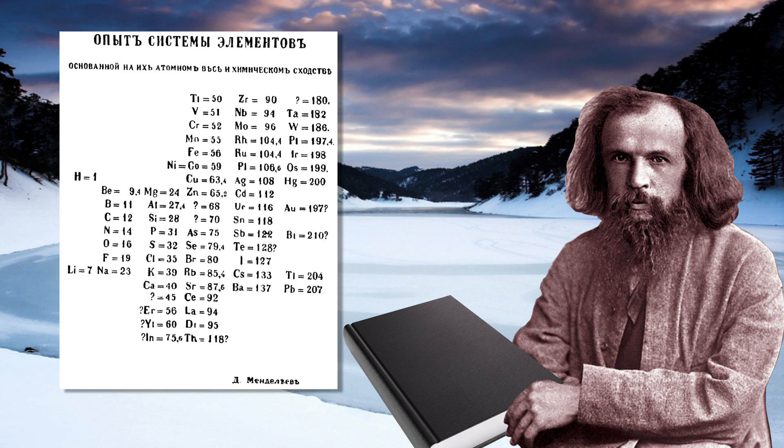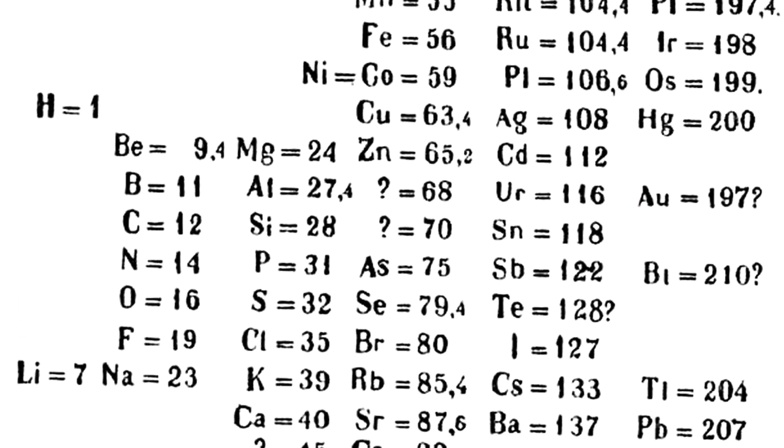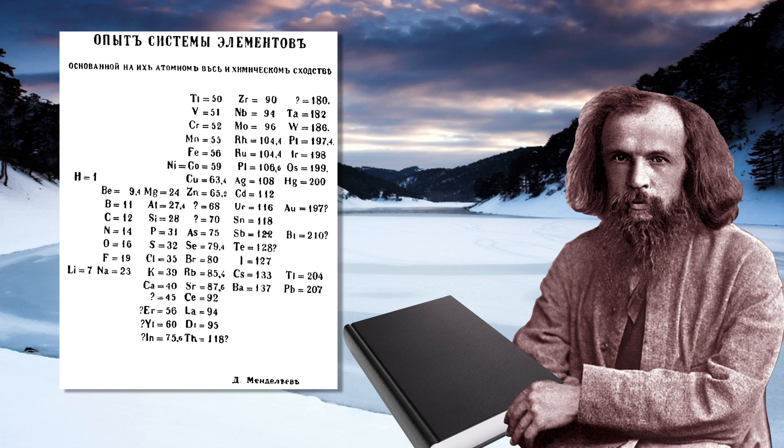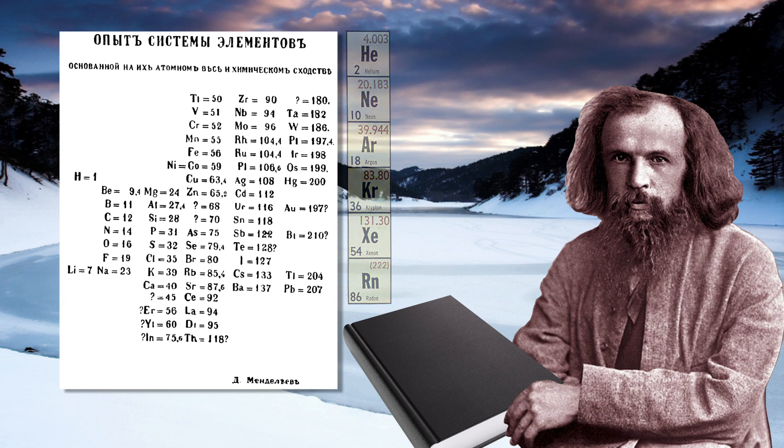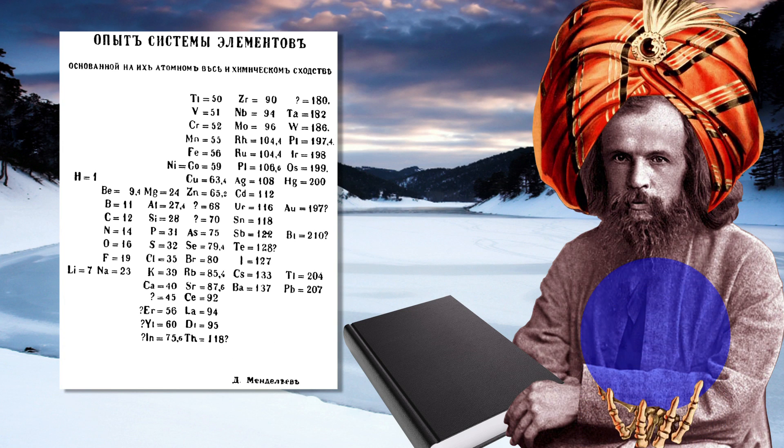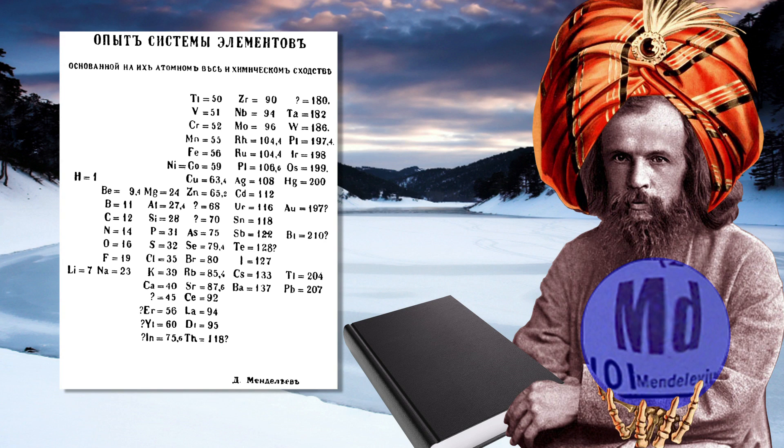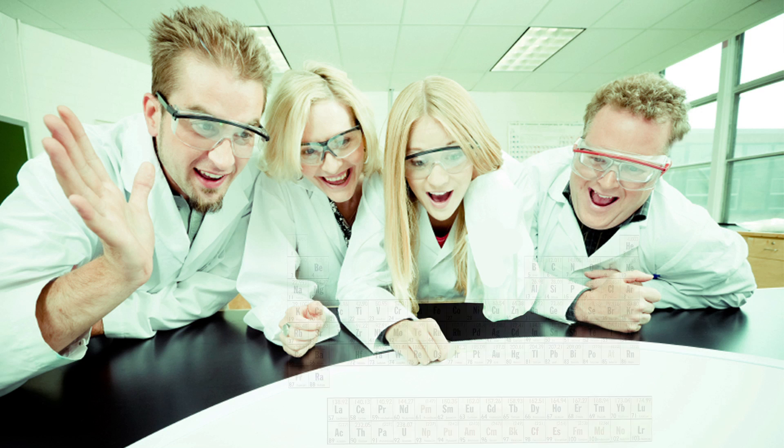He didn't get everything right immediately. First, he was only working with the 63 known elements of his time. Second, his original table didn't include the noble gases. However, he was able to predict additional properties of unknown elements, and his work was taken up by other chemists.